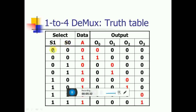For example, with selection 0,0: the output is available on this line. If A is given as 0, you get 0 at the output; if A is given as 1, you get 1. For the 0,1 selection, the output is active on D1 — if you give 0, you get 0; if you give 1, you get 1. Similarly for 1,0 the output is available on D2: 0 gives 0, and 1 gives 1.